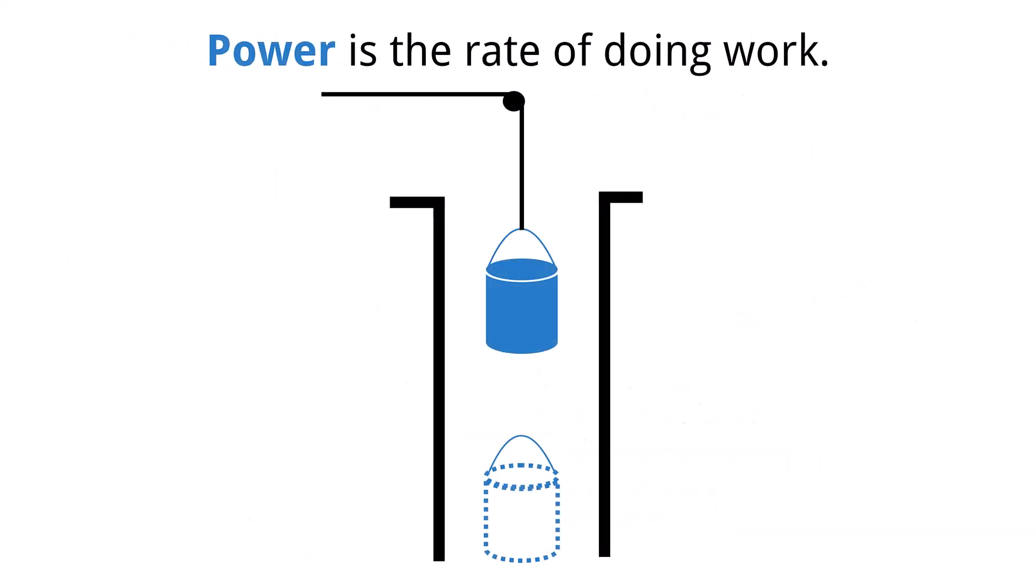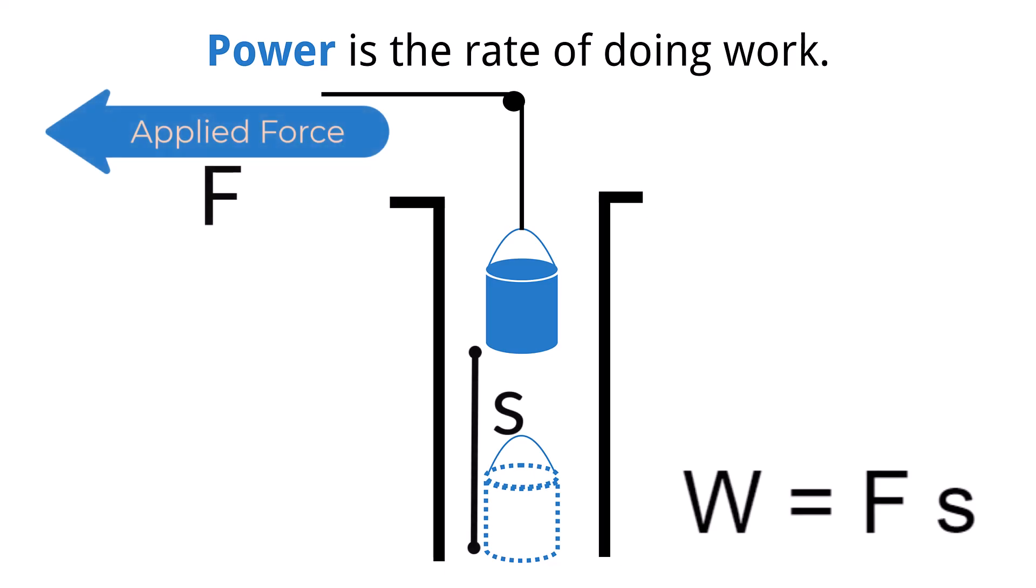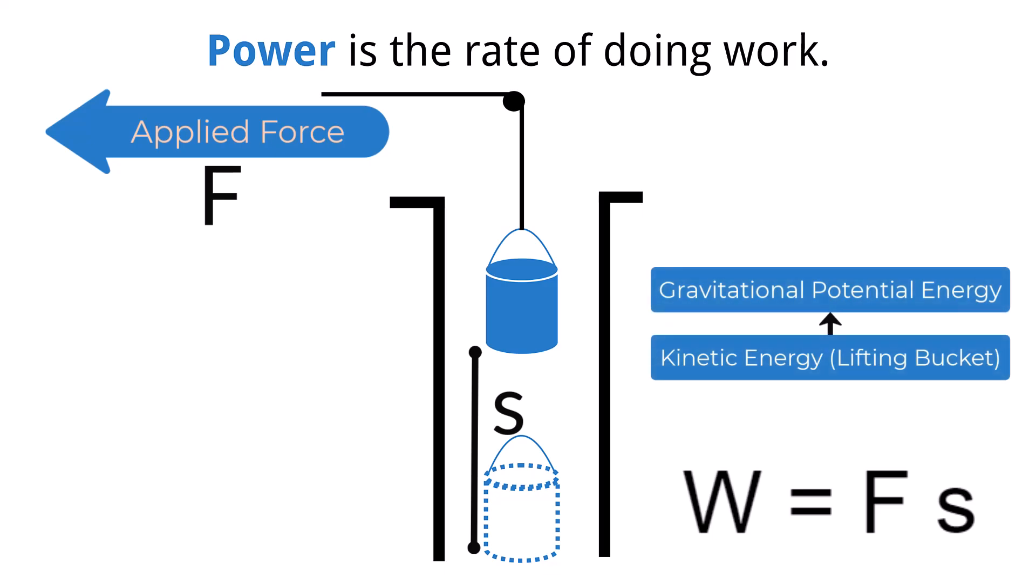Power is the rate of doing work. Lots of power means that lots of work is being done in a short period of time. An example of this might be lifting a bucket from a well. The force from the rope on the bucket over the distance of the well is the work being done. The energy conversion is the kinetic energy of the moving bucket being converted to gravitational potential energy as it increases its height from its original position. Where power fits into this situation is how quickly that conversion from kinetic to gravitational potential energy occurs.